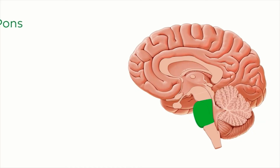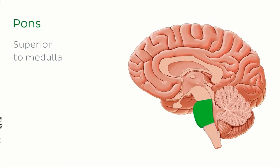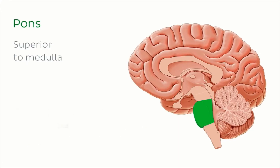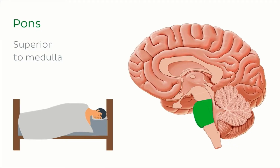Next up we have the pons, found immediately superior to the medulla. This part of the brainstem is appropriately derived from the Latin word for bridge, as it spans the two halves of the cerebellum, which we'll look at in just a minute. It also plays a role in regulating your sleep cycle, so please limit your all-nighters and give your pons some rest.